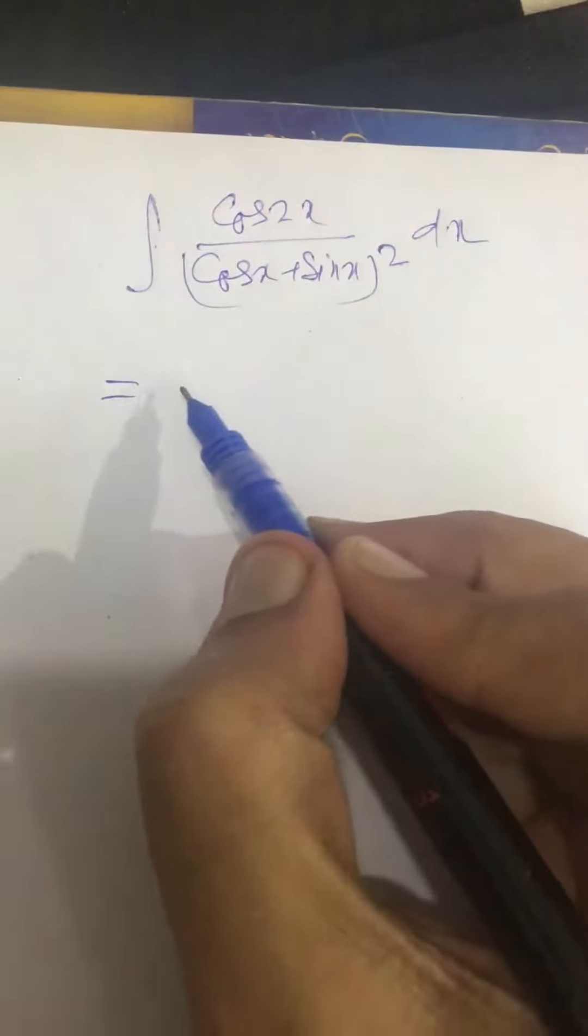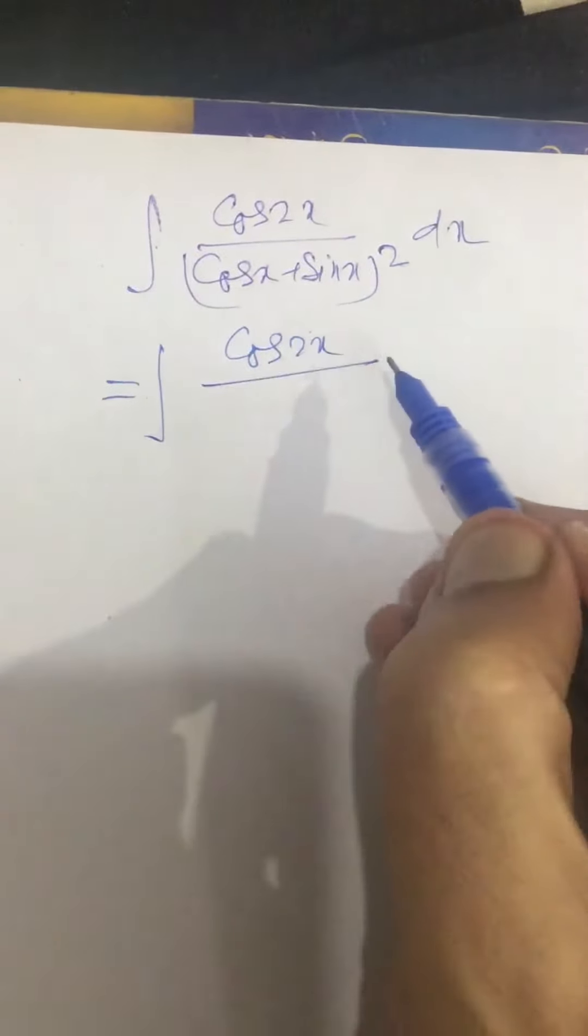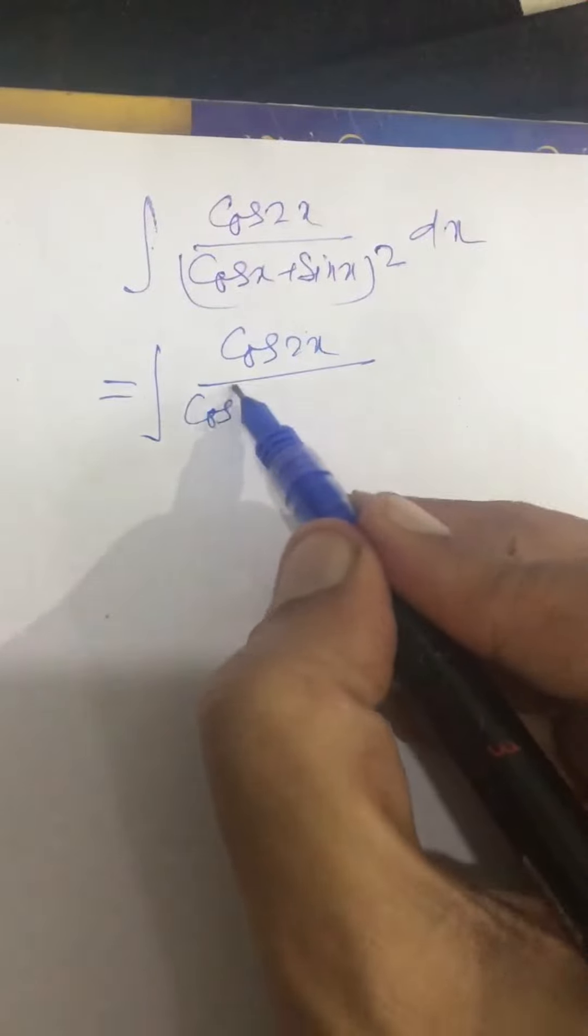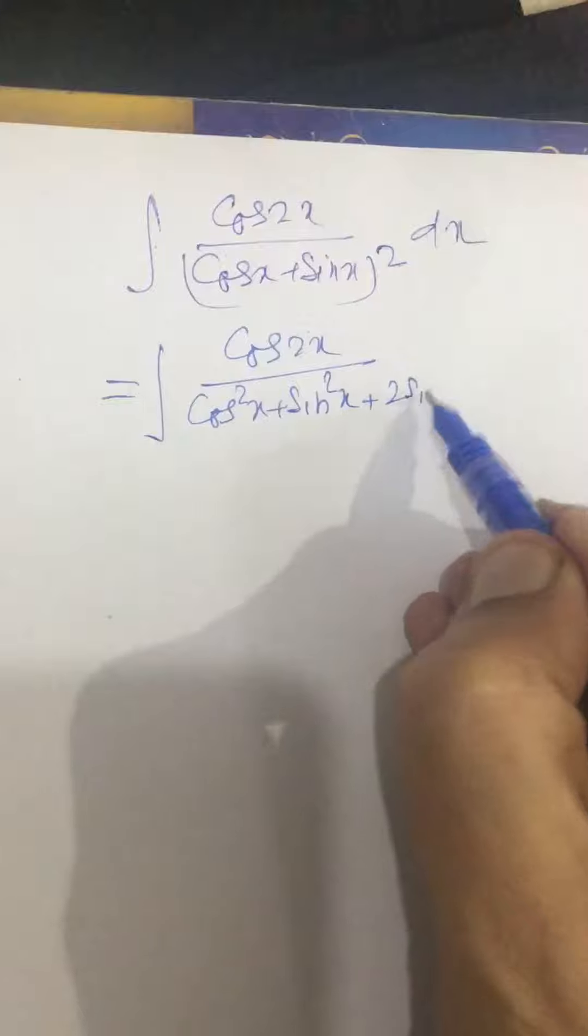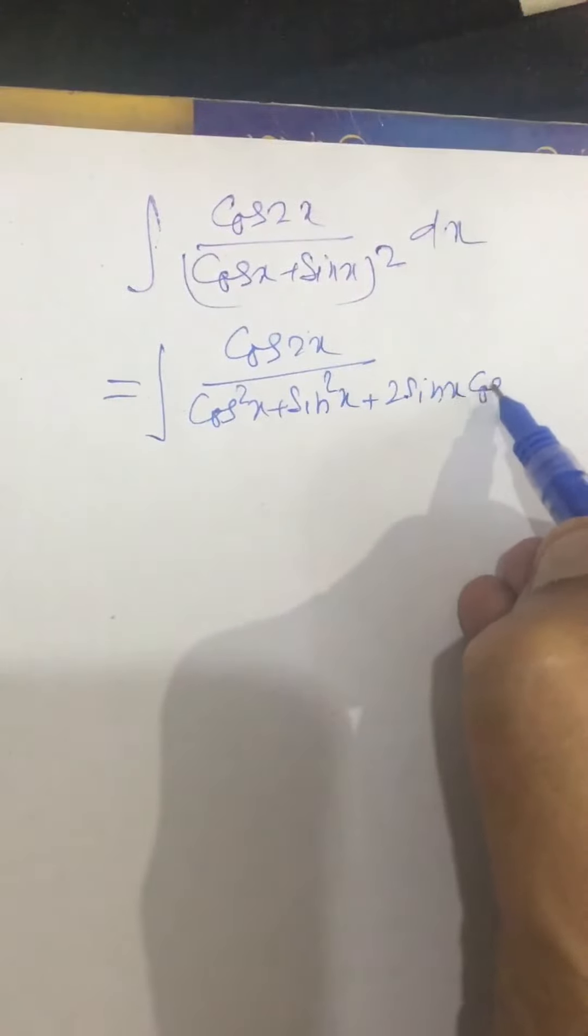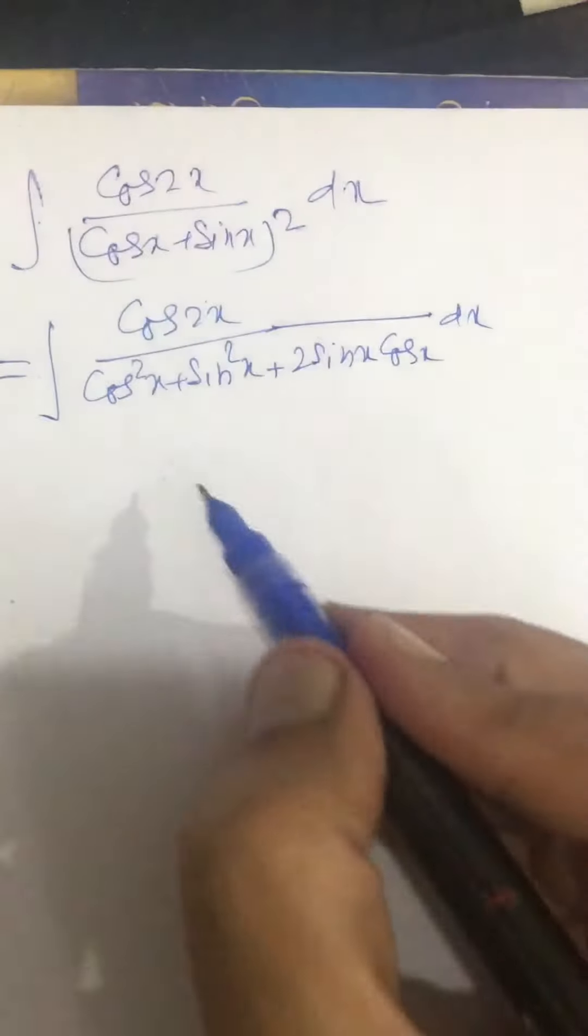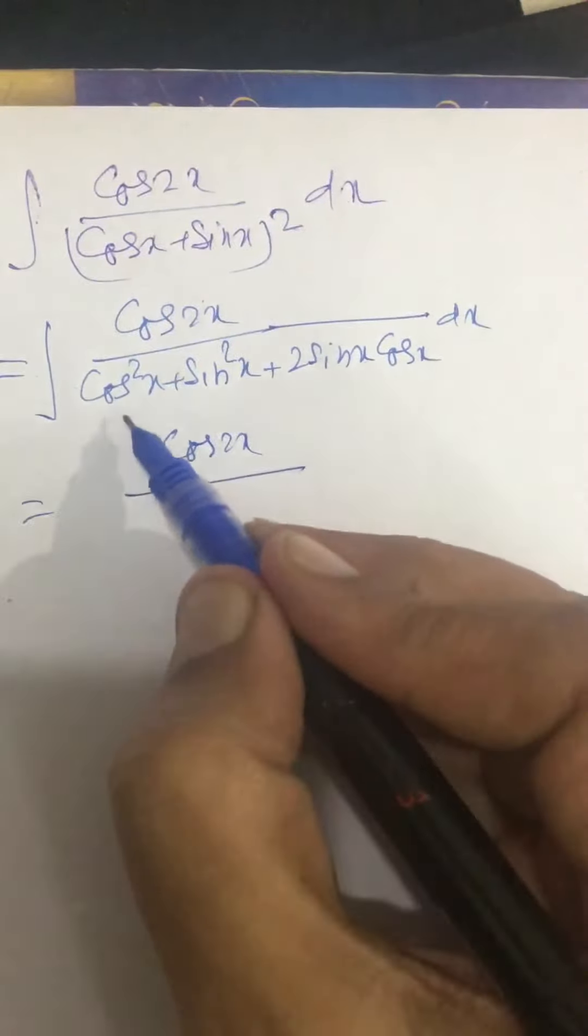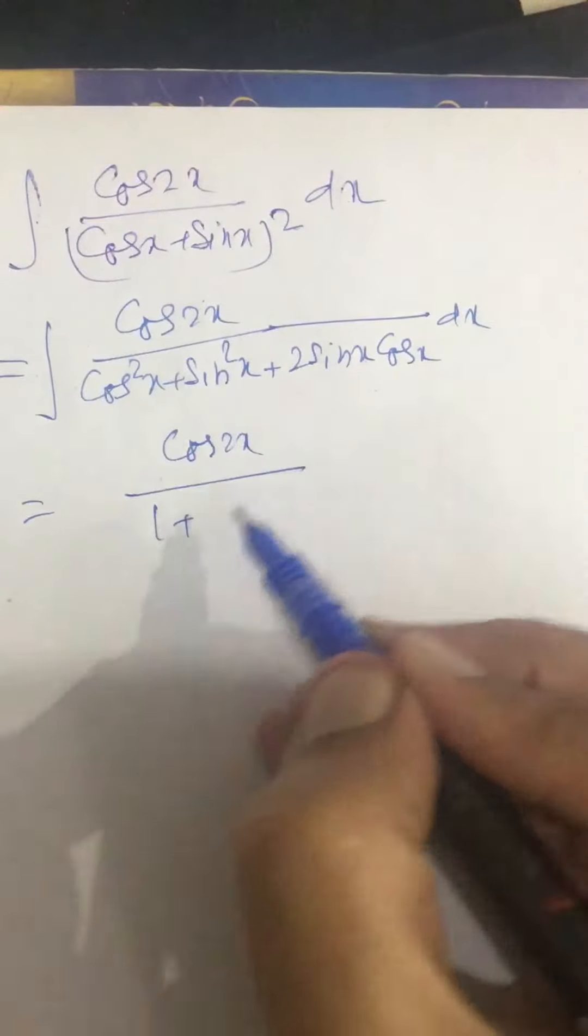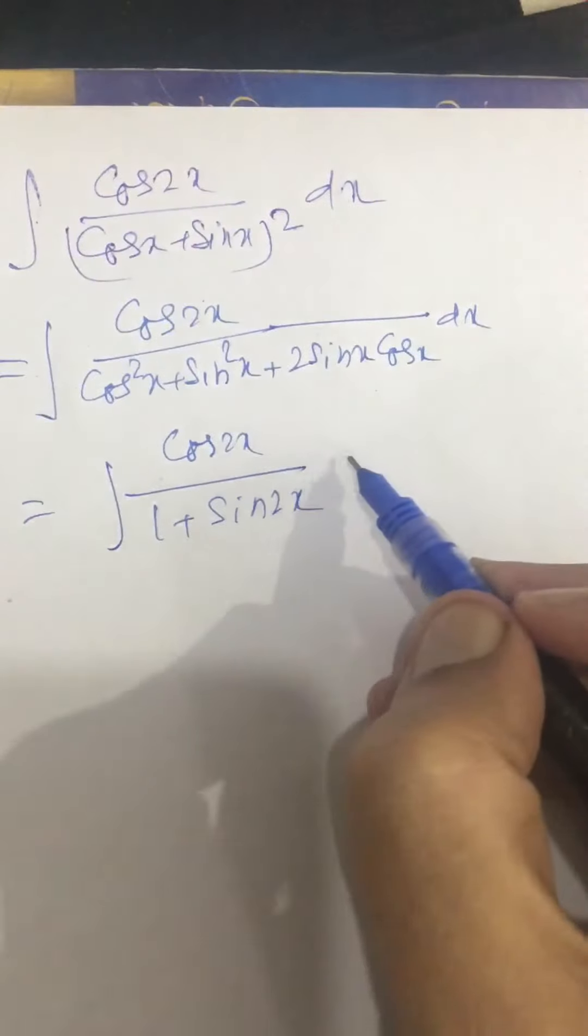This we can write as cos2x divided by cos²x plus sin²x plus 2sinx cosx dx. Now, cos²x plus sin²x is 1 and 2sinx cosx is sin2x.